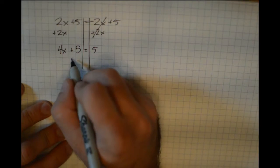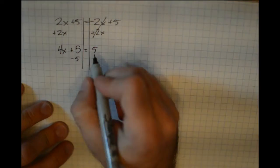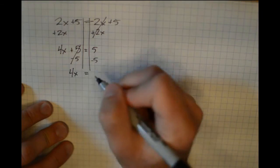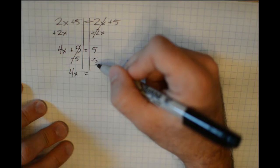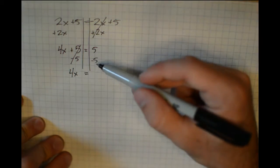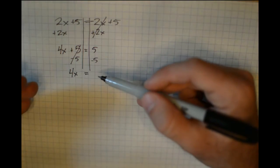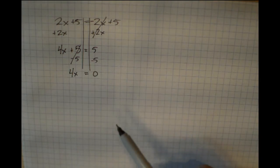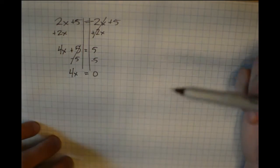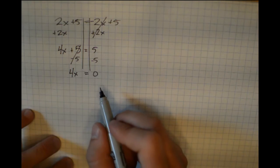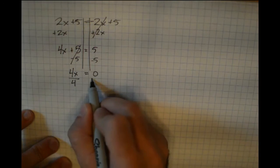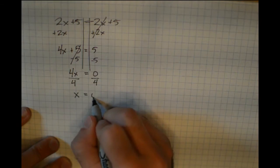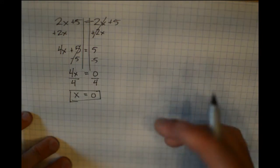Next, I subtract 5 from both sides to remove the number from the left. 5 minus 5 is 0, leaving just 4x. On the right, 5 minus 5 is also 0. Some students get confused here, but 0 is a perfectly fine number to have. We're not in a special case — we still have a variable. Dividing both sides by 4: 4 divided by 4 is 1x, and 0 divided by 4 is 0. So x equals 0, which is a perfectly valid solution.